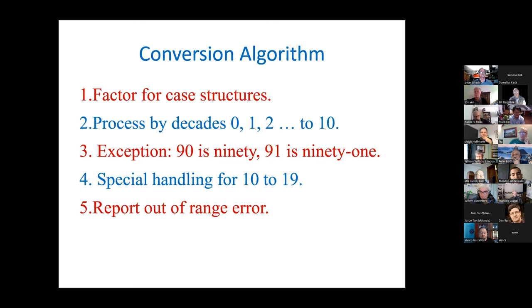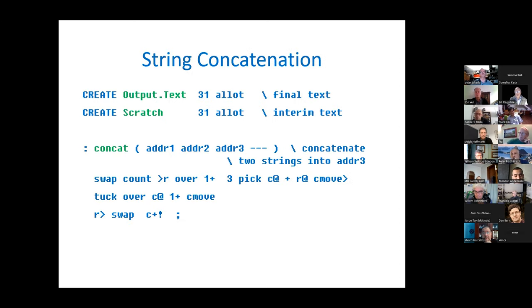We're going to find one of the key exceptions is the difference between the number 90 and 91, or the even tens and beyond. If we're saying the number 91, we say ninety and then one, but the even number 90 is not said ninety zero. There are special handling for the numbers 10 to 19, and we want to be able to detect an out of range error.